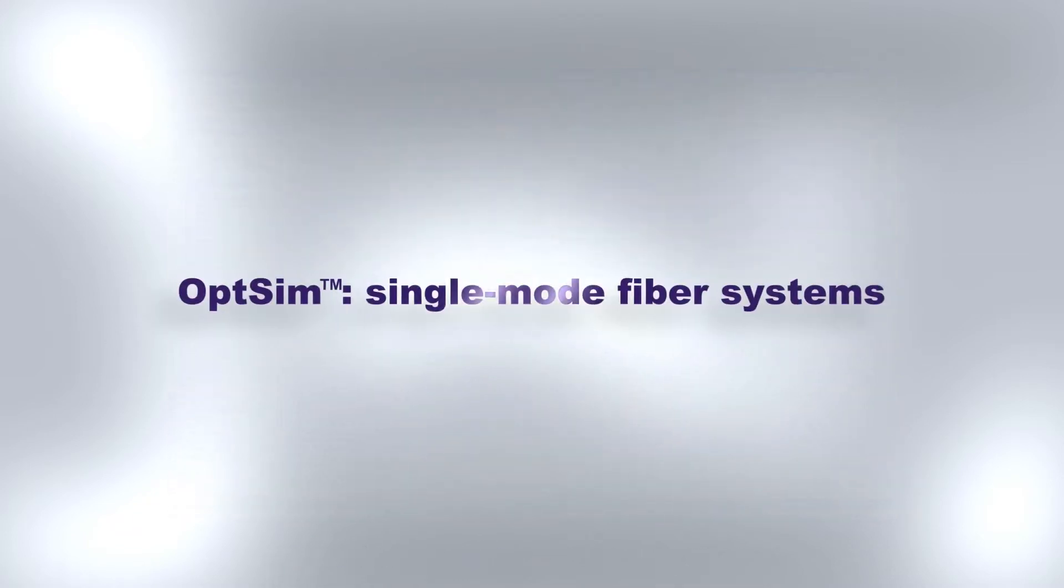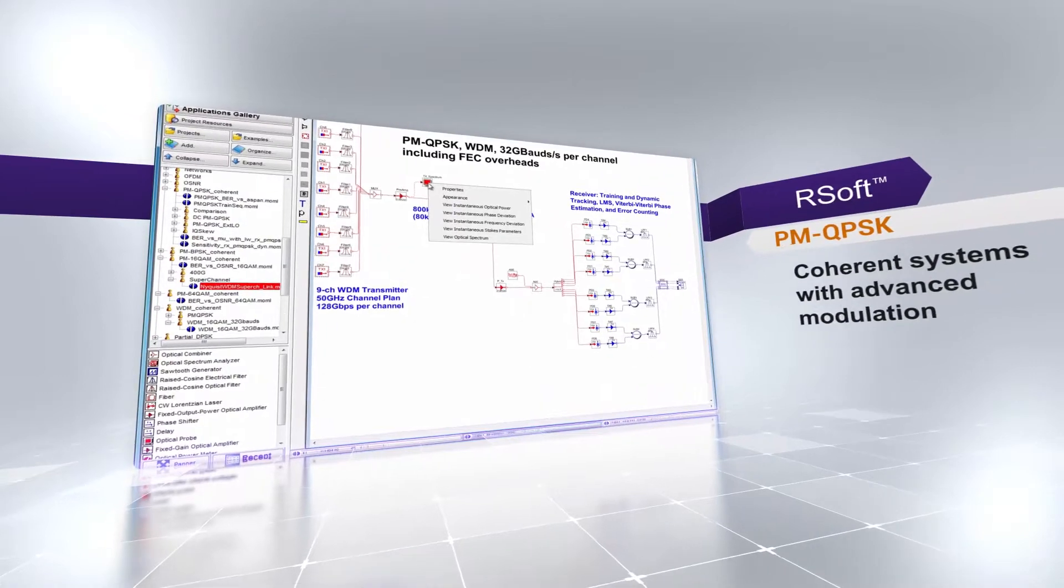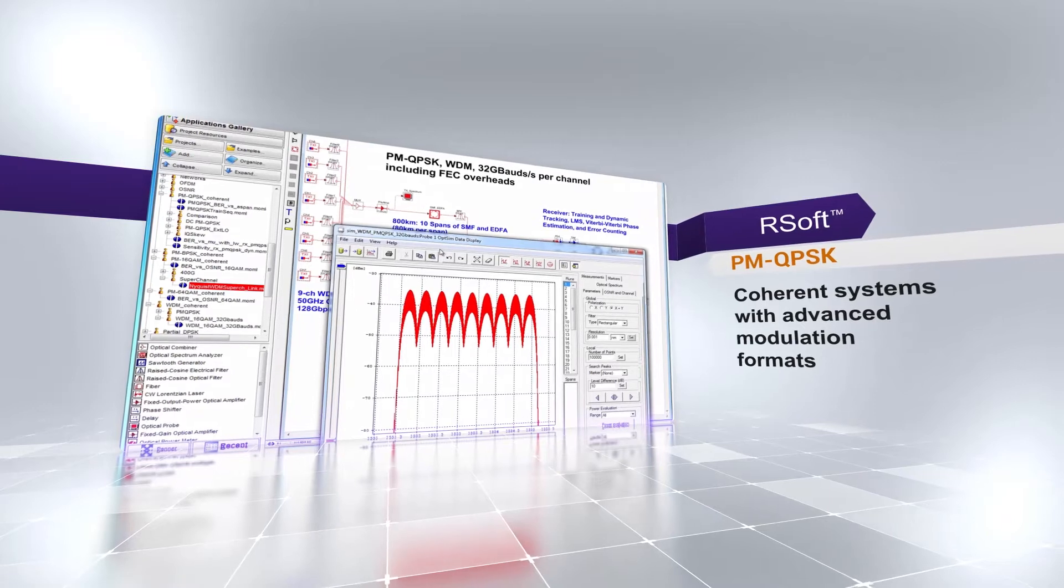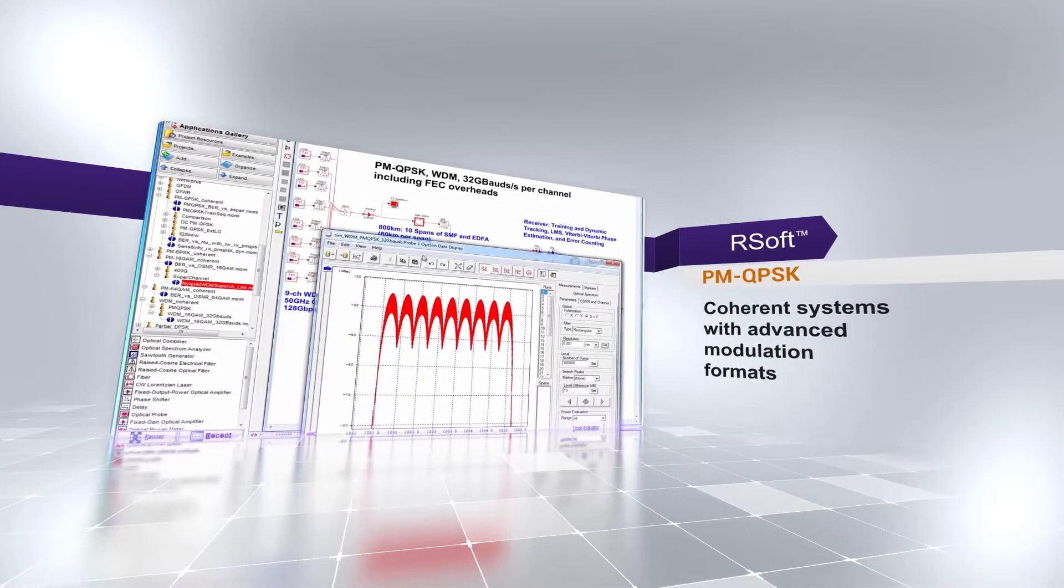Opsim is an award-winning physical layer modeling tool used for single-mode fiber-based systems. Opsim helps you understand system penalties and analyze transmission impairments for both intensity and phase-modulated systems. You can quickly implement a new design with a rich library of components, pre-supplied application notes, and powerful visualization tools.